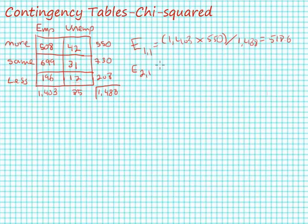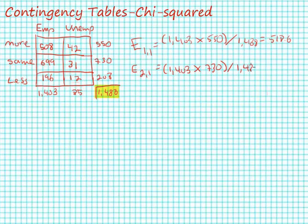The expected value for cell (2,1) — that is row two, column one — covers the employed respondents who believe government spending should remain the same. Again, I use my column marginal 1,403, multiply that by my row marginal for this row which is 730, and divide by my table total 1,488, getting an expected value of 688.3. We observe 699 individuals in this cell; if these two measures are independent we should observe approximately 688.